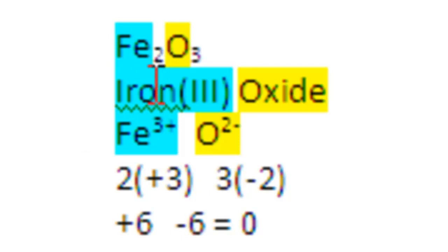According to the formula, there are 2 irons, and each of those irons must have a positive 3 charge in order for the math to work out. So 2 positive 3's contributes a total of positive 6. Therefore, it's iron 3 oxide.